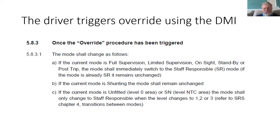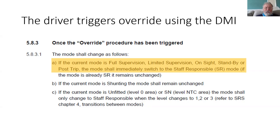If you are in unfitted — which means you're in level zero — or SN, which means you're in level NTC, then the override is stored until you change into levels one, two, or three, in which case the train will enter those levels in staff responsible instead of in FS or OS as appropriate. So it does allow you to enter an area of ETCS from an area of non-ETCS without tripping at the border.